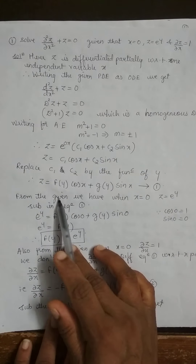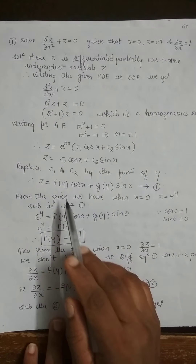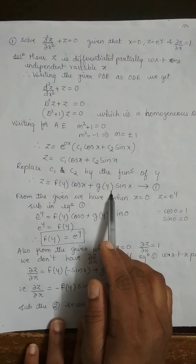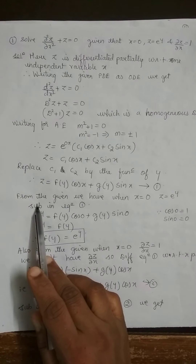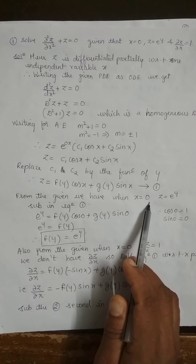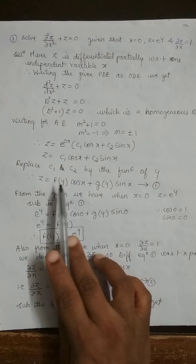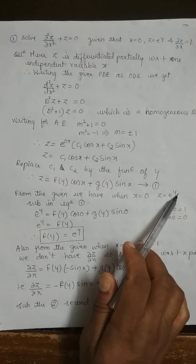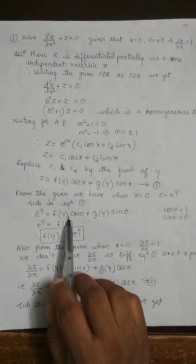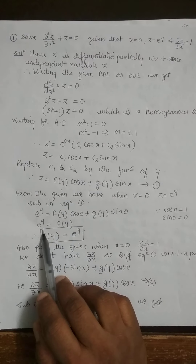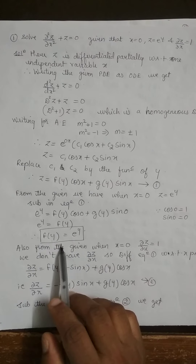Since conditions are given, we use them to find f(y) and g(y). Taking the first condition: when x = 0, z = eʸ. Substituting x = 0 and z = eʸ into equation 1: cos(0) = 1, sin(0) = 0, so we are left with f(y) = eʸ. Therefore f(y) = eʸ.